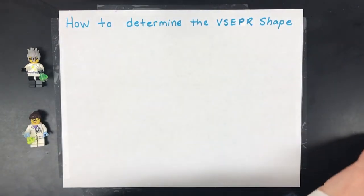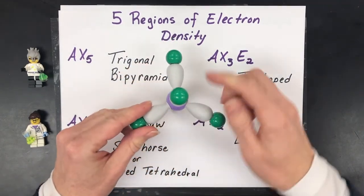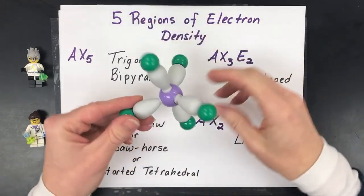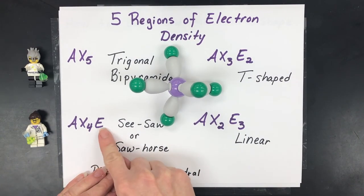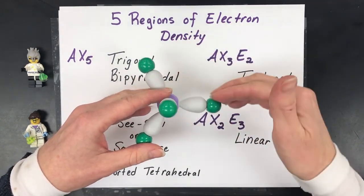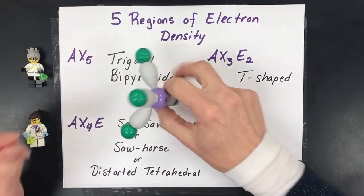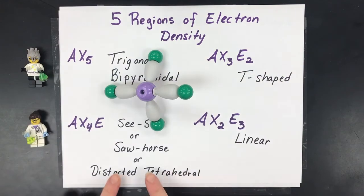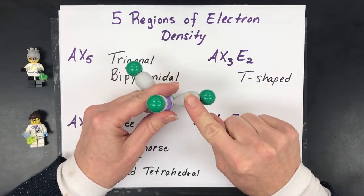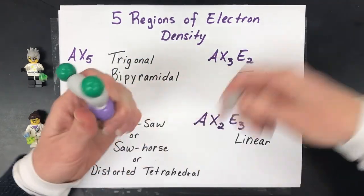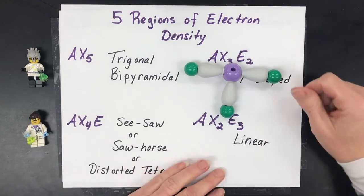Expanded octets occur when atoms have more than 15 protons in the nucleus. The base five-region shape is called trigonal bipyramidal — you can see the triangle in the center with two pyramids on top and bottom. When a bond becomes a lone pair, it must occupy the largest angle, so lone pairs go in the trigonal planar portion. This gives a seesaw shape, also called a distorted tetrahedron. With two lone pairs placed at the largest angles the shape is called T-shaped.